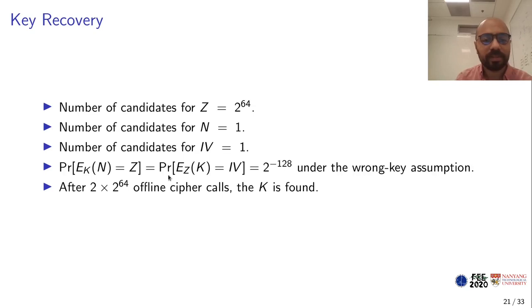We can see that we need to satisfy this equation, and under the wrong key assumption, this equation has probability 2 to the minus 128. Since we are doing 2 to the power 64 queries, with very high probability we will not be able to find a wrong key that satisfies this equation, and only the correct key will satisfy it, which will lead to key recovery. This has complexity 2 times 2 to the power 64 offline cipher calls.